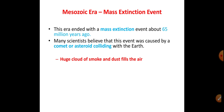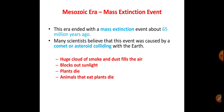The Mesozoic era ended with a mass extinction event about 65 million years ago. Many scientists believe this was caused by a comet or asteroid colliding with the earth. The impact created a huge cloud of smoke and dust that filled the air, blocking out sunlight. The plants died, and then the herbivorous animals that ate plants also died.